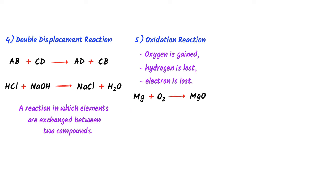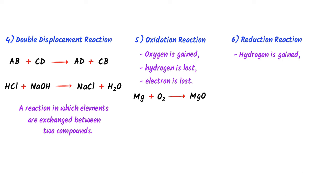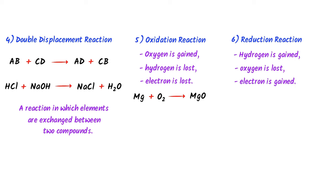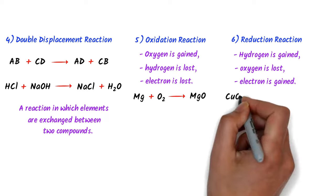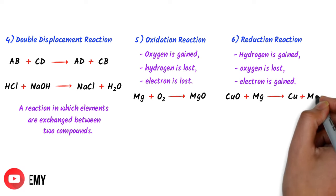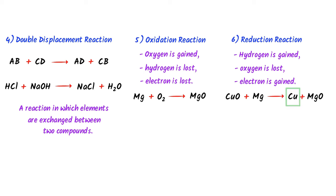The fifth type is oxidation reaction — a reaction in which oxygen is gained, hydrogen is lost, or an electron is lost. For example, magnesium plus oxygen react to form magnesium oxide — this is an oxidation reaction because magnesium gains oxygen. The sixth type is reduction reaction — a reaction in which hydrogen is gained, oxygen is lost, or an electron is gained. For example, copper oxide plus magnesium react to form copper plus magnesium oxide — copper is reduced because it has gained electrons.